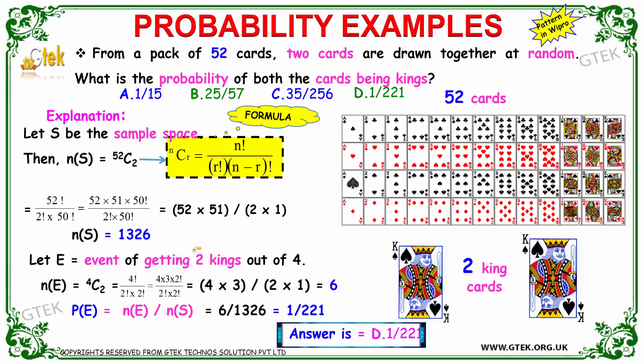The possibility of getting two kings out of 4, that's 4 factorial divided by 2 into 2 factorial. That's 4 into 3 into 2 factorial divided by 2 factorial into 2 factorial. You got 4 into 3 divided by 2, that's 6.